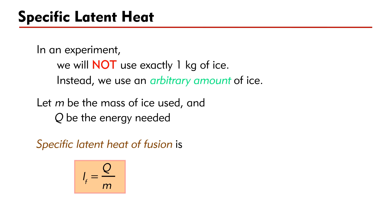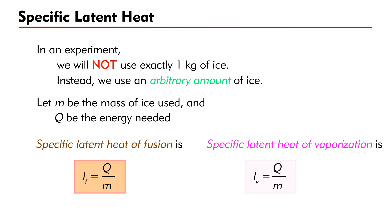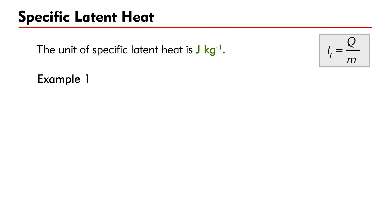This is the mathematical definition of specific latent heat of fusion of a solid. Similarly, the specific latent heat of vaporization of a certain liquid is L_V equal to Q divided by m, where Q is the energy required to vaporize m kilograms of the liquid. From the equation, the unit of specific latent heat is joules per kilogram.